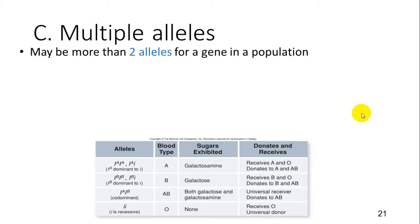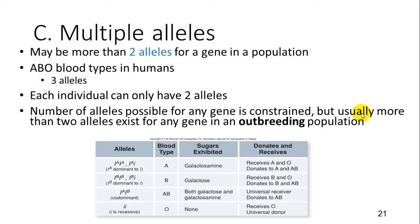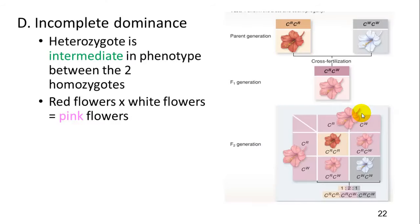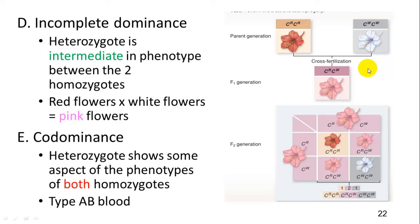There may also be more than two alleles for a gene in a population. One person can only have two alleles at one locus, but an example is blood types: A, B, and O come from three different alleles. Each individual can only have two, but others exist in the population. Incomplete dominance is where you get an intermediate phenotype in a heterozygote — for example, crossing red and white flowers produces reduced pigmentation. Co-dominance is where both alleles are expressed, such as AB blood type where both A and B are expressed.